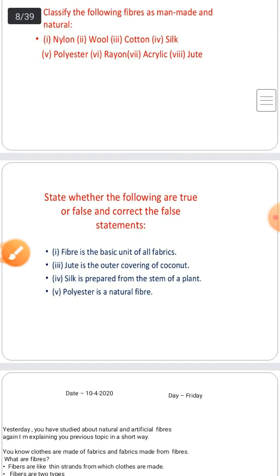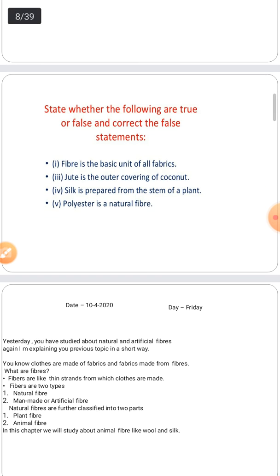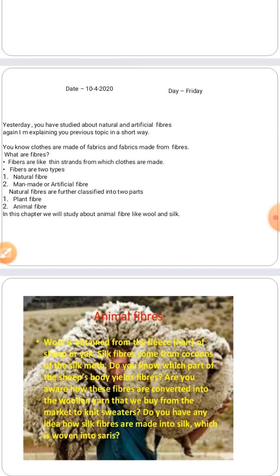The second question was True and False. Fiber is the basic unit of all fabrics — True. Jute is the outer covering of coconut — False. Silk is prepared from the stem of a coconut — False, it is prepared by the silkworm. Polyester is a natural fiber — False, it is an artificial fiber.